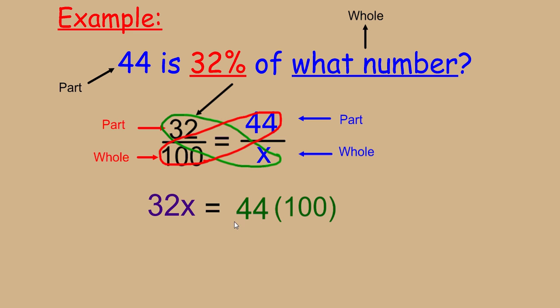We simplify both sides by actually multiplying, and now since we have 32x and we want to find out what just x is by itself, we're going to do the inverse of multiplication, and the inverse operation is division.